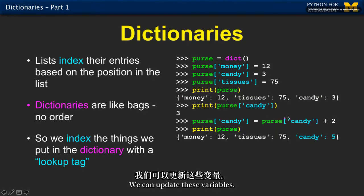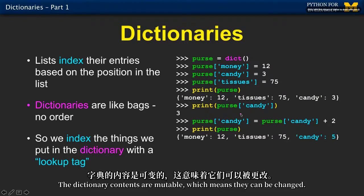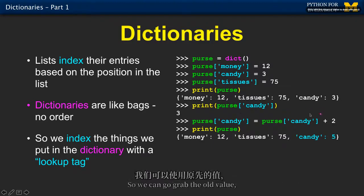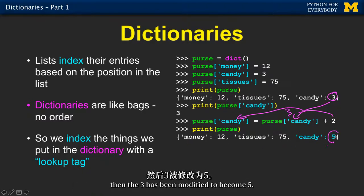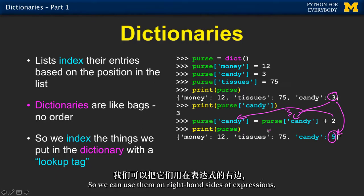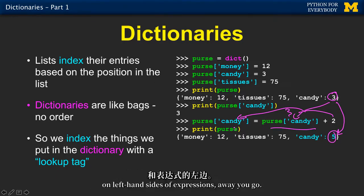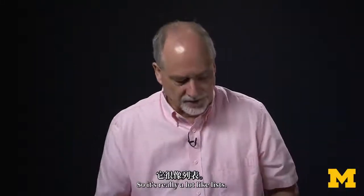We can update these variables. The dictionary contents are mutable, which means they can be changed. So we can go grab the old value of purse sub candy, which is a three, add two to it, and then put a five back in. And then we can print this out, and then the three has been modified to become five. So we can use them on right-hand sides of expressions, on left-hand sides of expressions, away you go. So it's really a lot like lists.